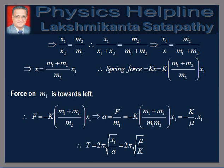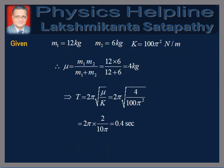Now we are in a position to solve the problem using these concepts. It is given that M1 = 12 kg, M2 = 6 kg, and k = 100π² N/m. Therefore the reduced mass μ = M1·M2/(M1 + M2). Putting in the values and simplifying, we get μ = 4 kg. Therefore the time period T = 2π√(μ/k). Substituting the values and simplifying, we get T = 0.4 seconds, which is the answer to the question.